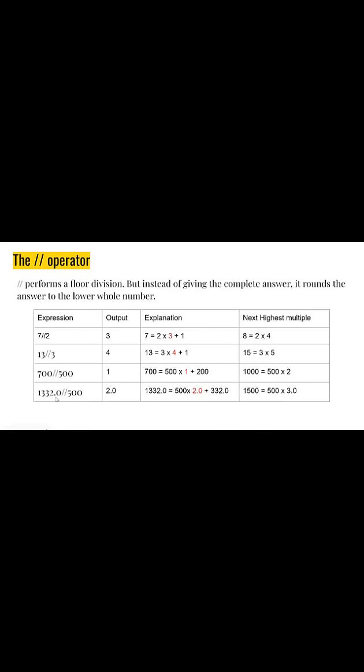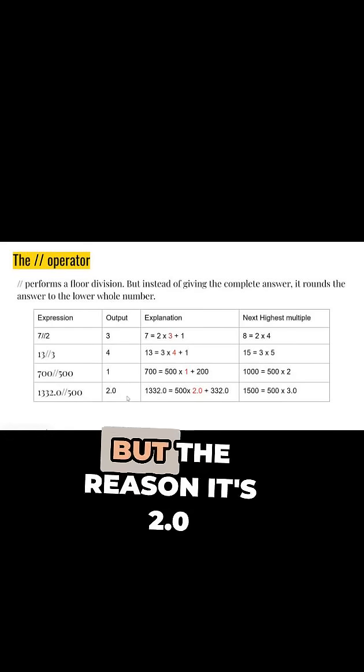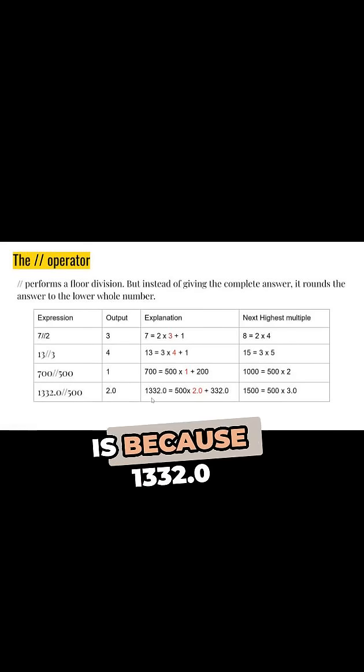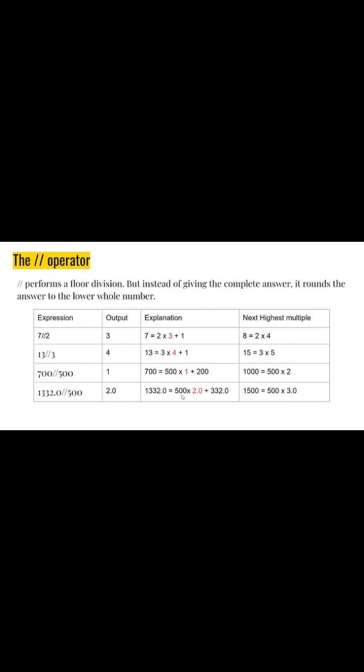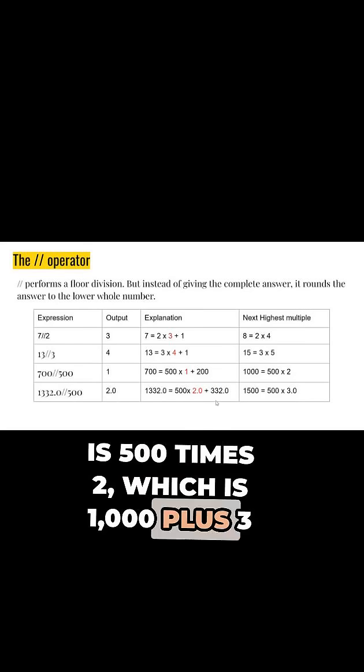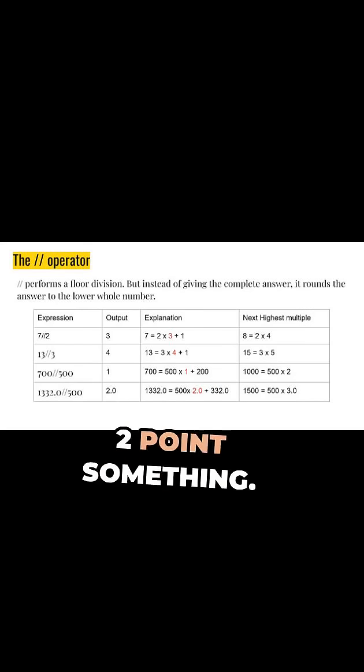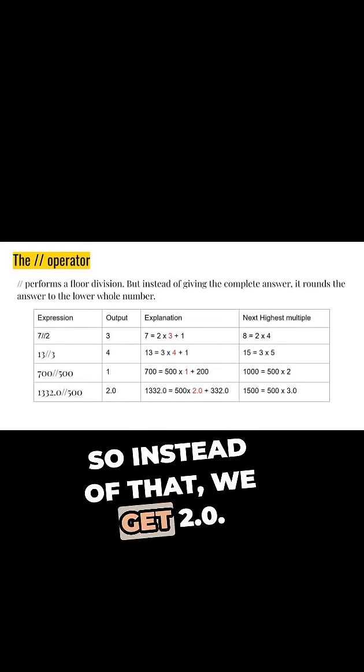1332.0 floor division 500 is 2.0. The reason it's 2.0 is because 1332.0 is 500 times 2, which is 1000, plus 332. So once again it's going to be 2 point something, so instead we get 2.0.